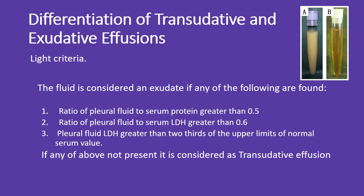Differentiation of transudative and exudative effusions uses Light's criteria. The fluid is considered an exudate if any of the following are found: ratio of pleural fluid to serum protein greater than 0.5; ratio of pleural fluid to serum LDH greater than 0.6; or pleural fluid LDH greater than two-thirds of the upper limit of normal serum value. If none of the above are present, it is considered a transudative effusion.